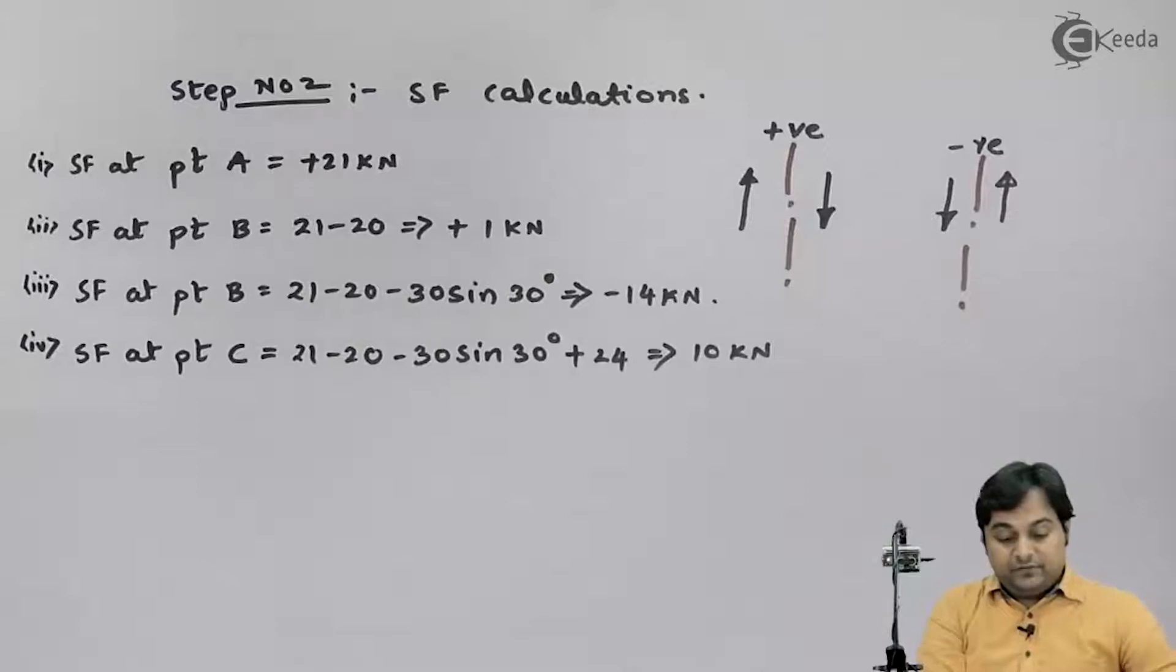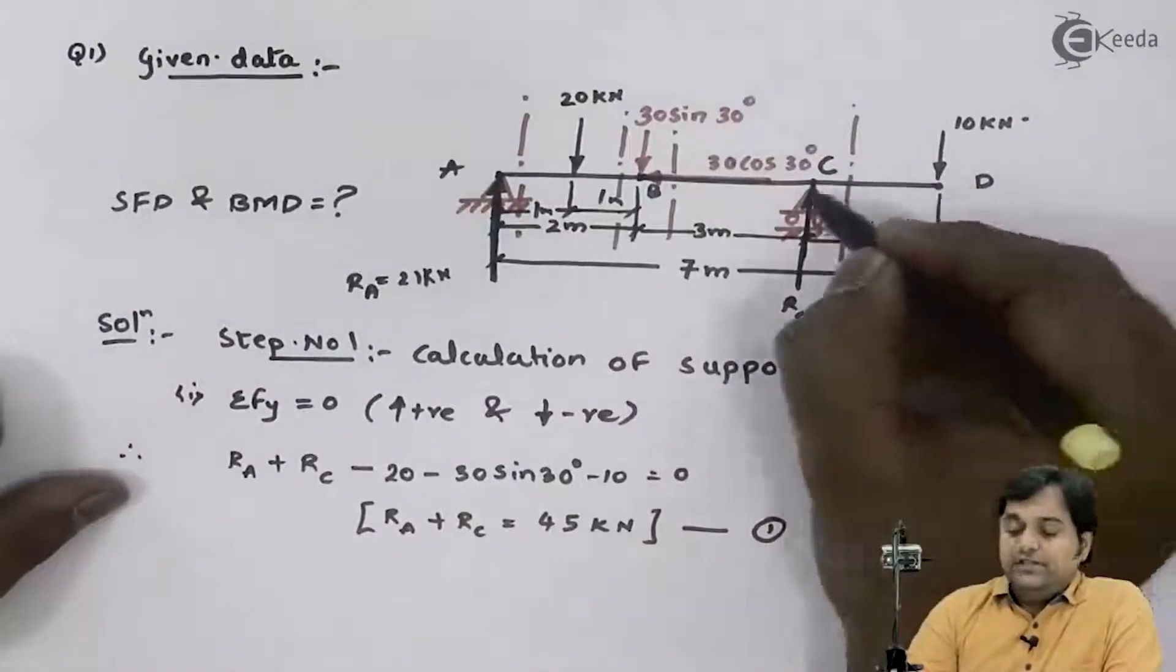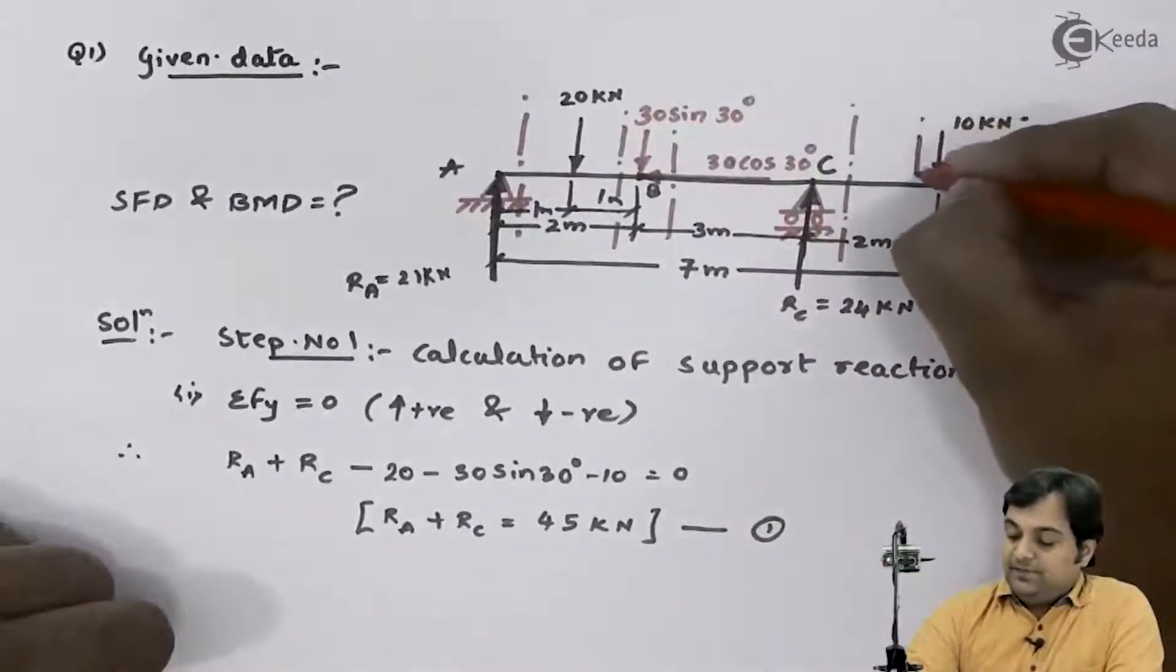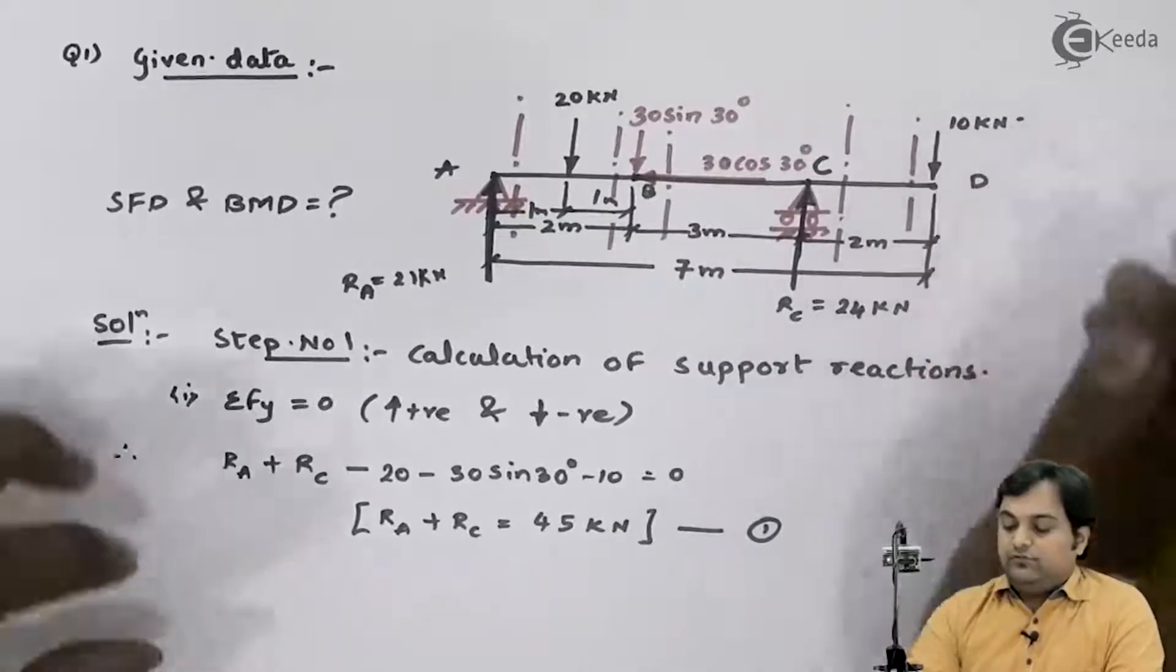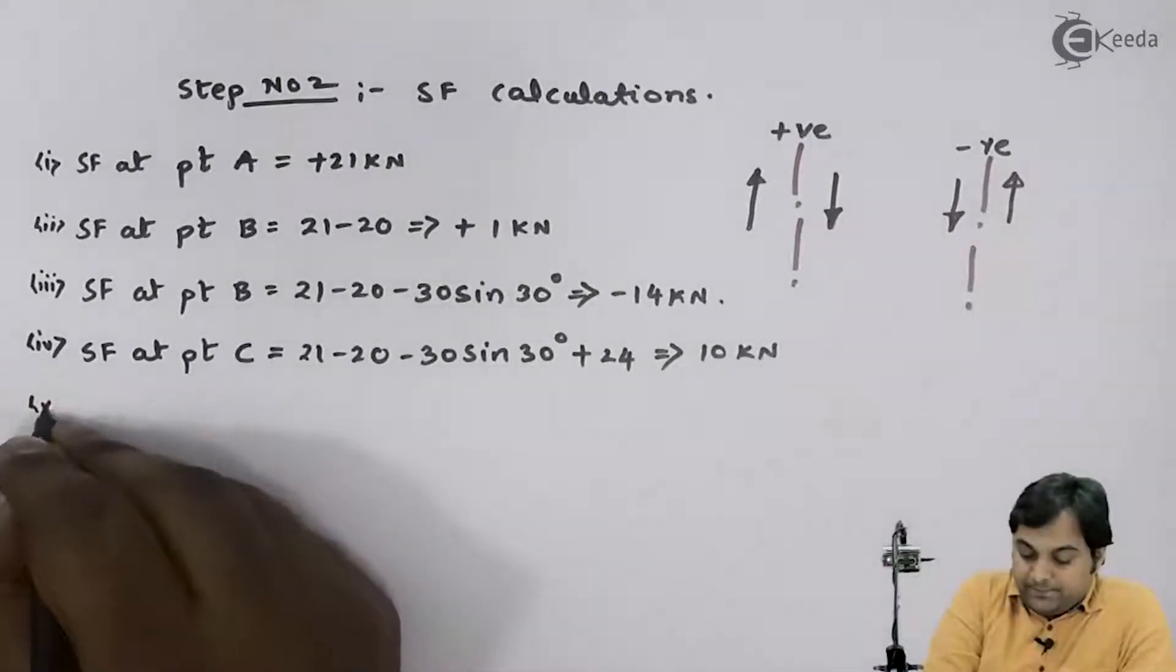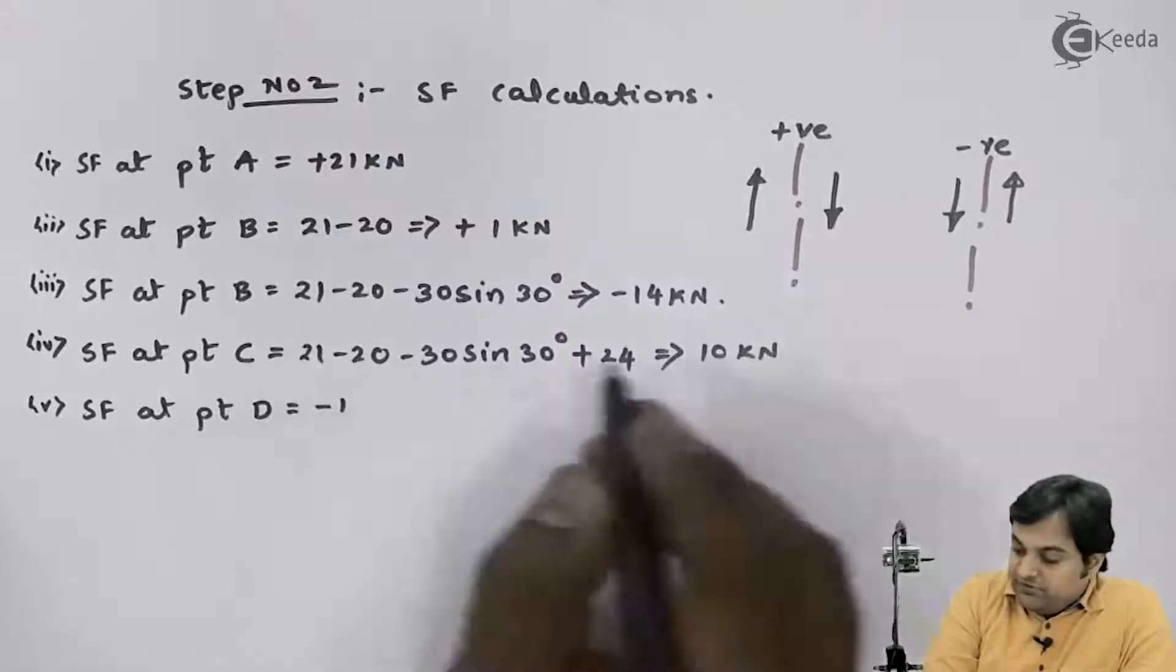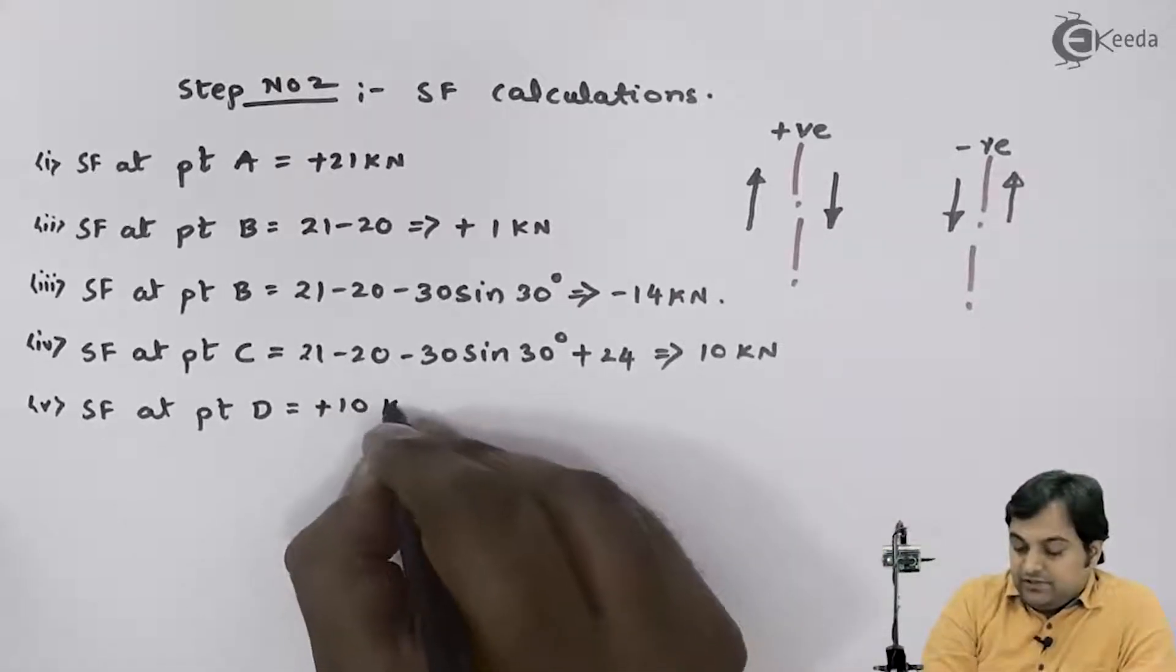After this I am left with just point D. As we can see, between C to D there is no load, so the value of SF which is at point C will be the same at point D. Only thing is now my section will be just to the left of D. If I take such a section, to the right I have downward force, so it should be taken negative. So SF at point D is plus 10 kilonewton.